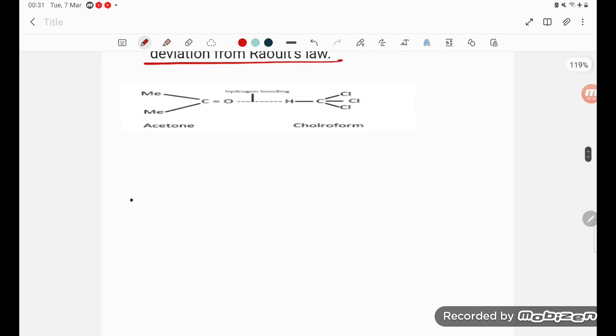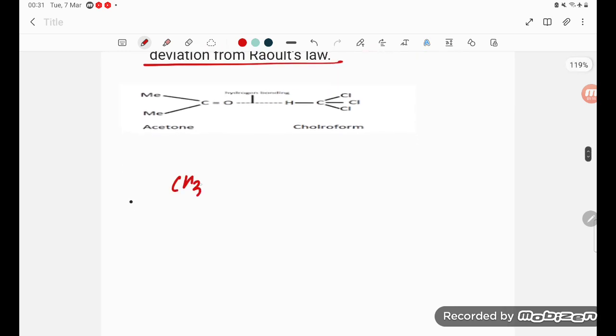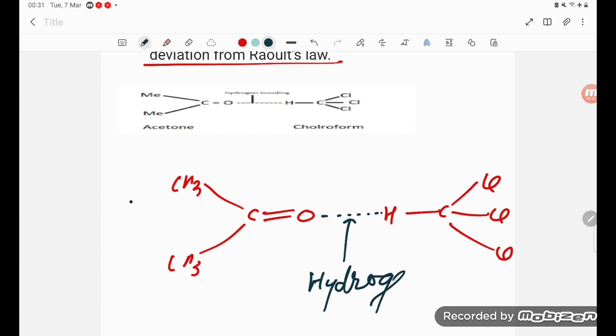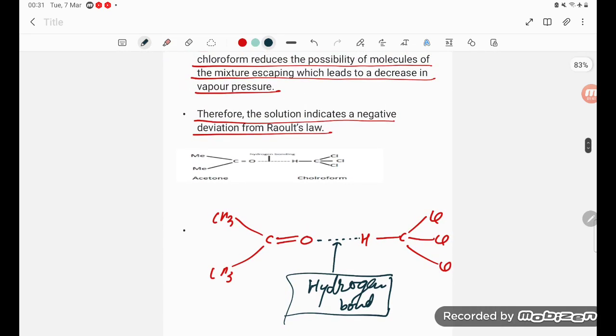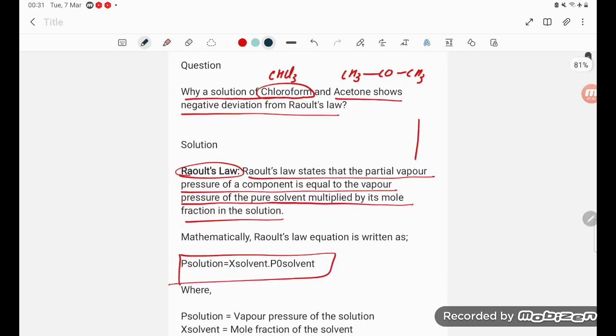So here you see, student, there is CH3, here is the double bond O, and this is hydrogen. They are going to form a hydrogen bond, student. As a result, this hydrogen bond is responsible for the decrease in the vapor pressure. As a result, chloroform and acetone show negative deviation from Raoult's law, student.